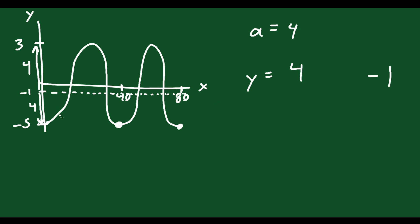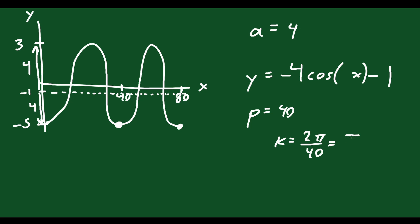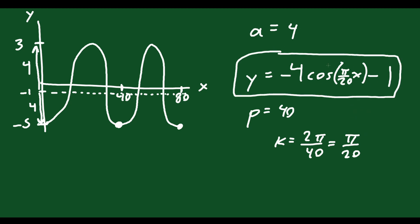This looks like a cosine function that's upside down — cosine starts at the top and goes down, but this starts at the bottom and goes up. So I'll say negative 4 cosine. The period looks like 40, so k equals 2π over 40, which is π/20. The final answer is y equals negative 4 cosine(π/20 · x) minus 1. Again, there are multiple answers — feel free to figure out some more for this one just as practice.